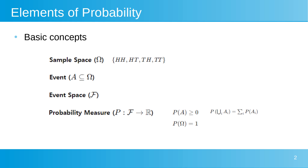I will firstly give a detailed overview of fundamental concepts in probability theory. The sample space omega represents the set of all possible outcomes, illustrated here as HHHTTHTT for the experiment of flipping two coins. An event A is a subset of the sample space, representing specific outcomes of interest such as HH for the event where both coins show heads.